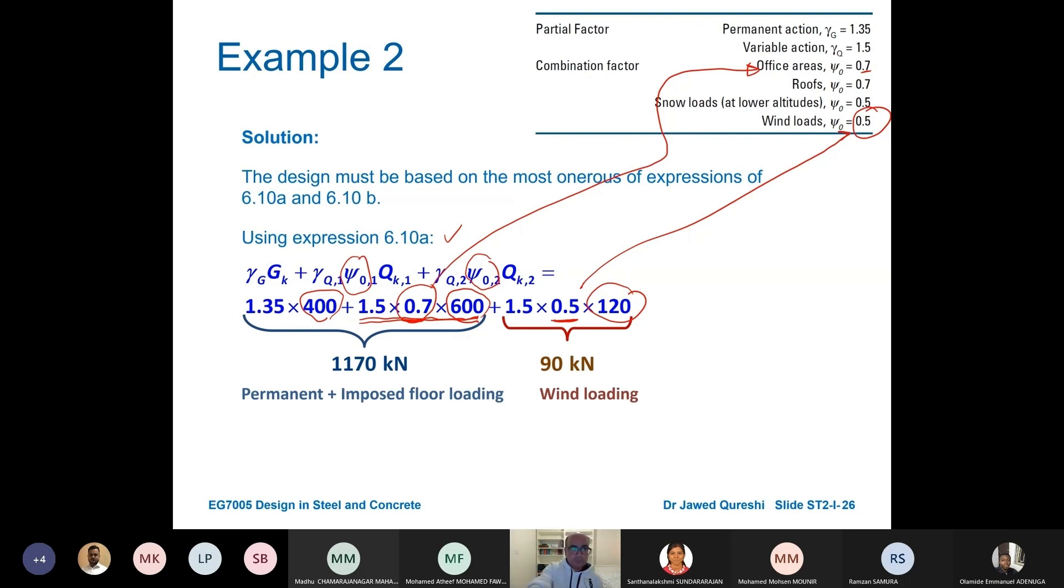So here effect of variable actions from wind and from vertical load is combined but these factors are different. This is 1170 kN and 90 kN. This is permanent plus imposed floor loading and this is wind loading. We're not adding it up, we will just create a diagram where we will have these loadings.